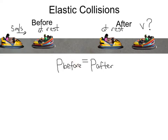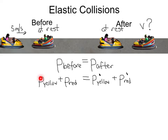The momentum before they collide has to equal the momentum after they collide. The momentum before will be the momentum of the yellow cart plus the momentum of the red cart, and that will equal the momentum after — the momentum of the yellow cart prime plus the momentum of the red cart prime. Let's assume the mass of each cart is 200 kilograms.